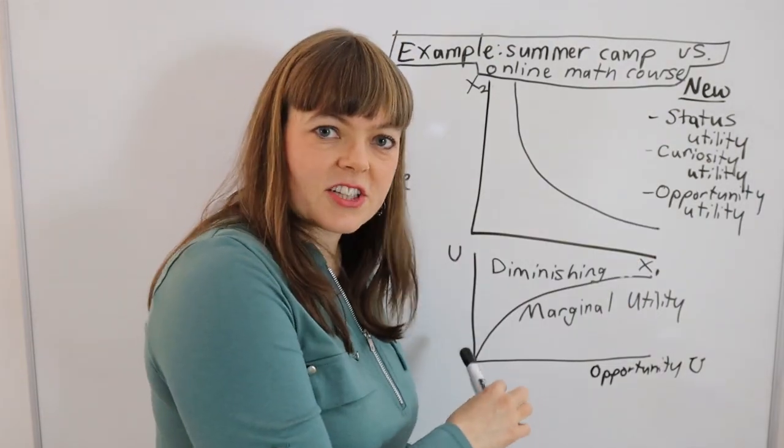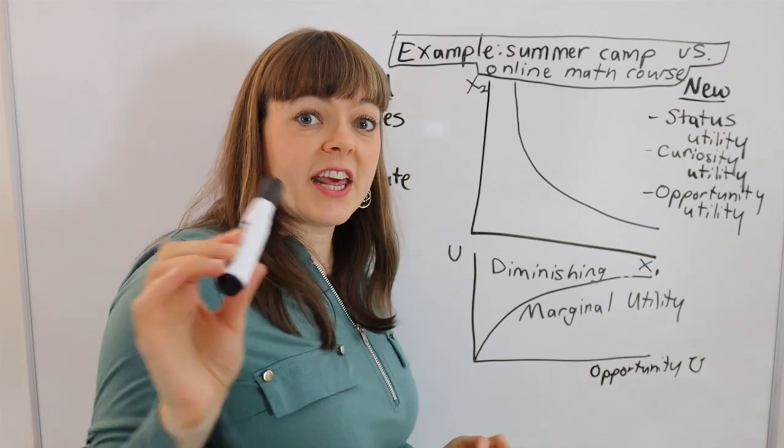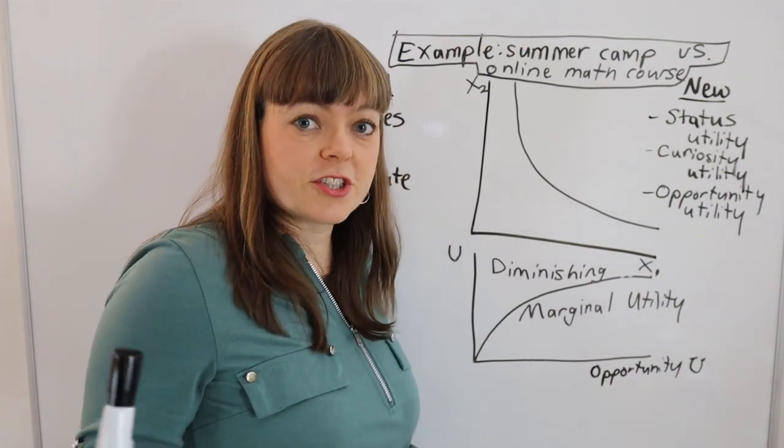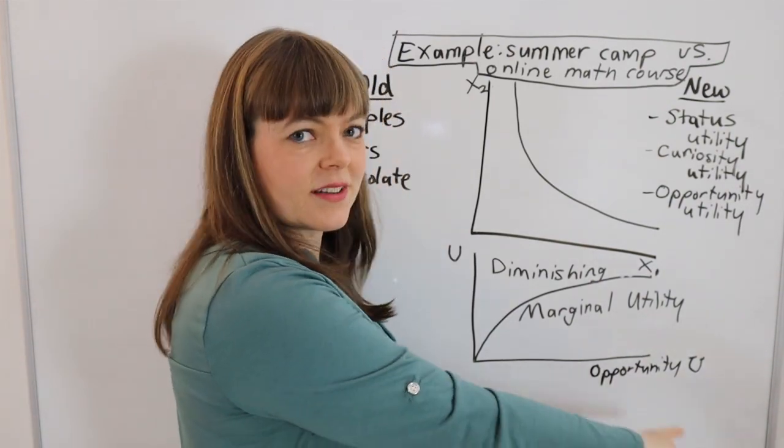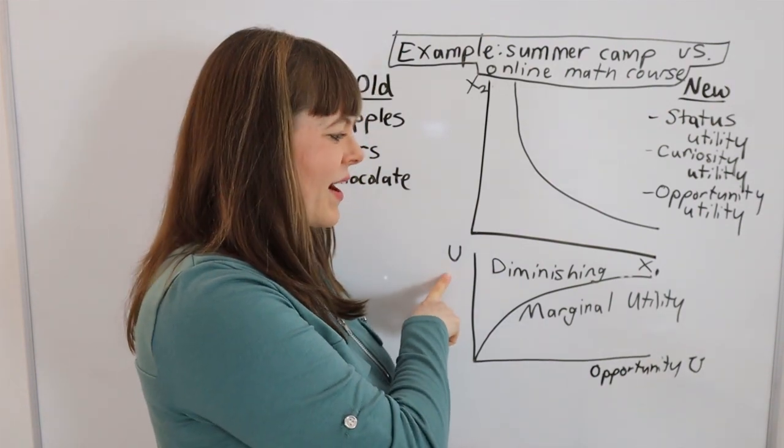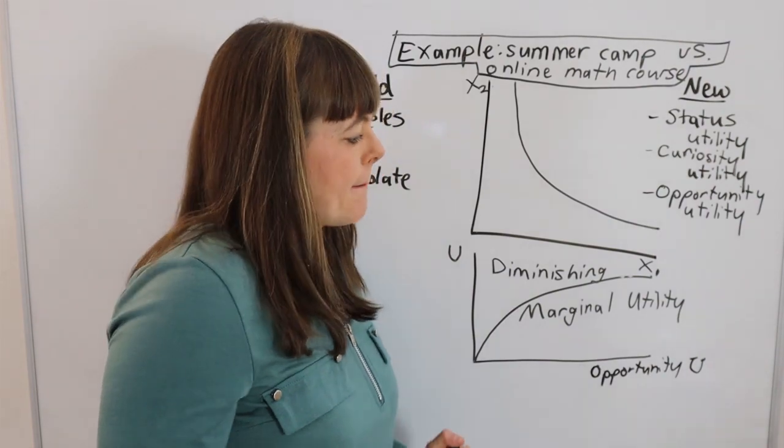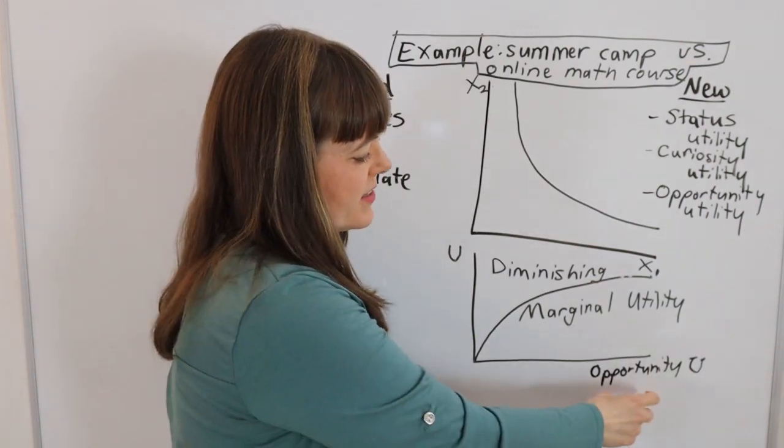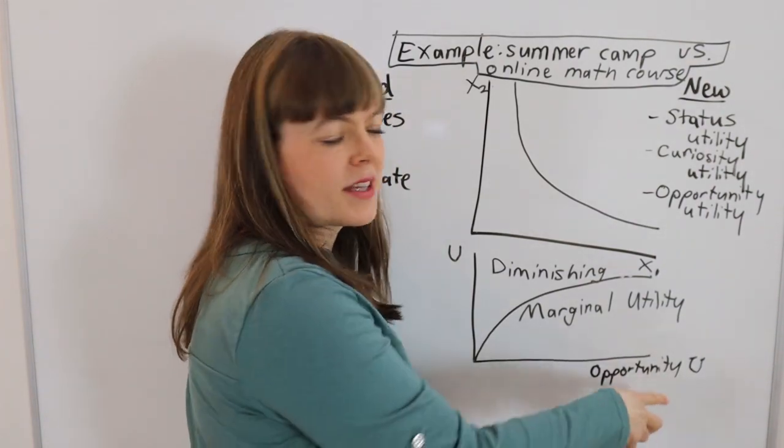So I think this is actually a good way of thinking about it, but it looks confusing at first because you're like, wait a second, we have utility on the x-axis. We have utility also on the y-axis. That's just weird.